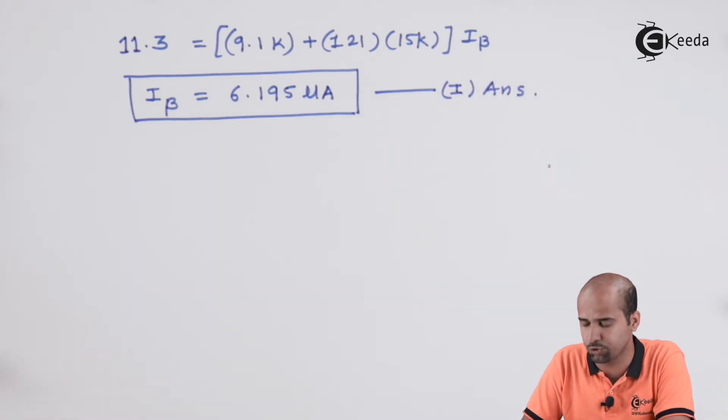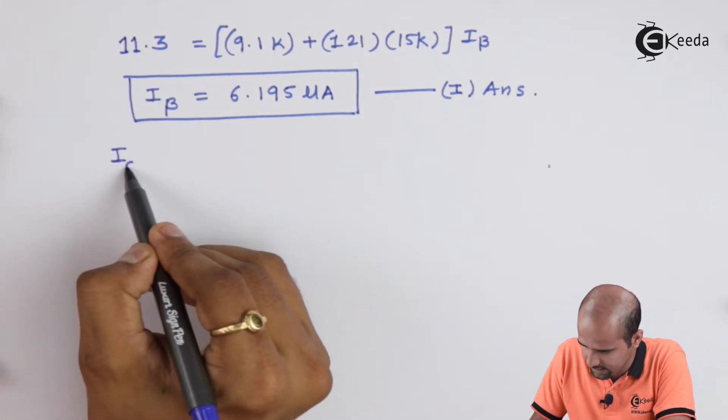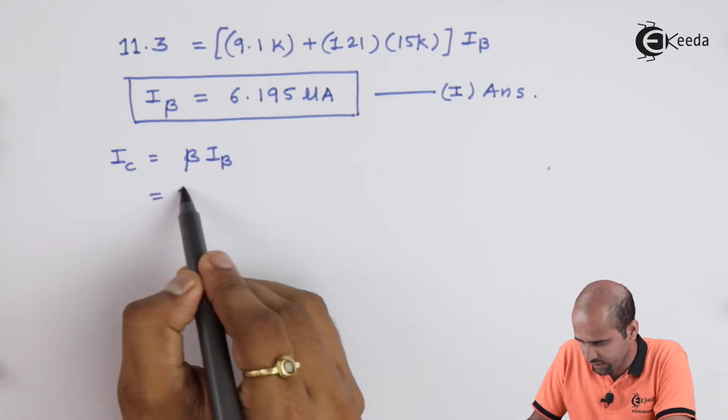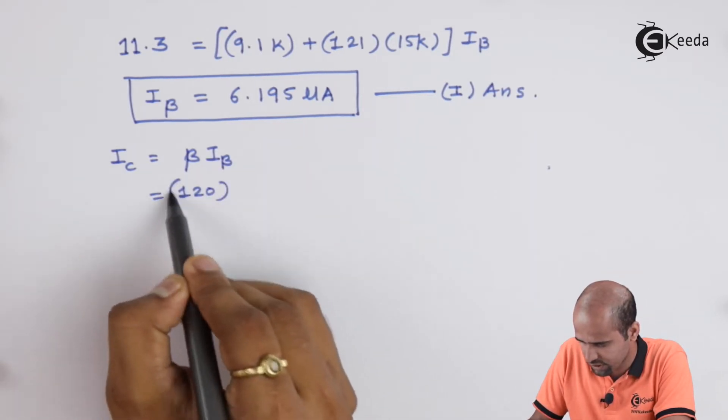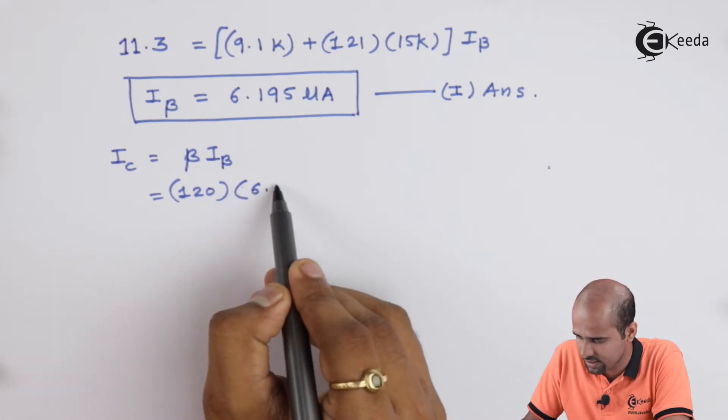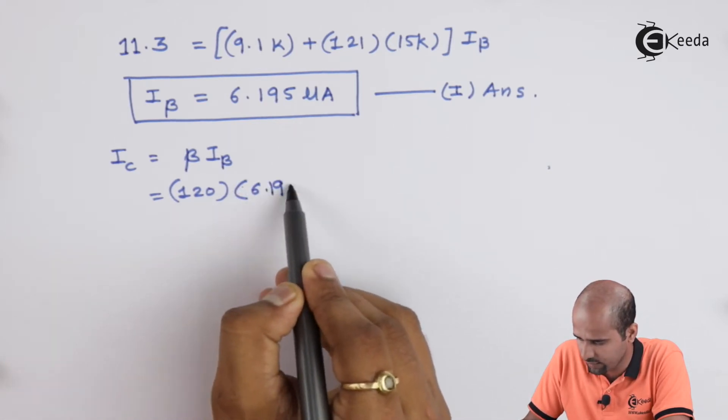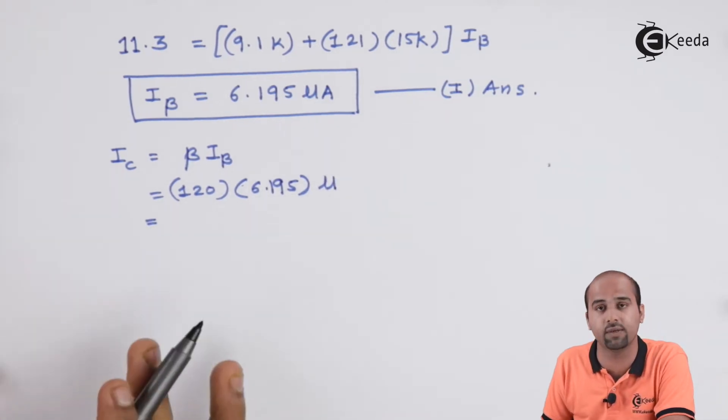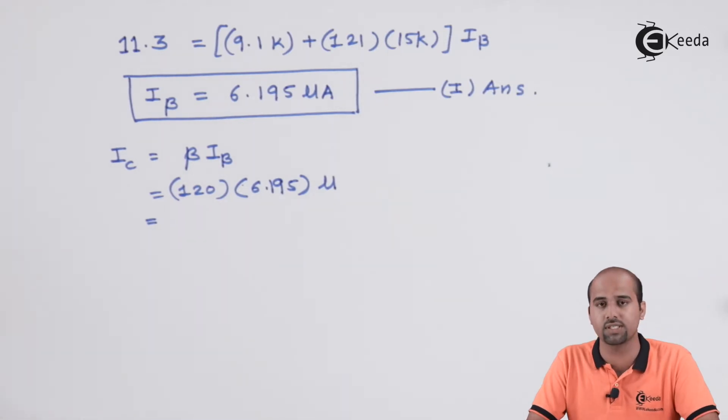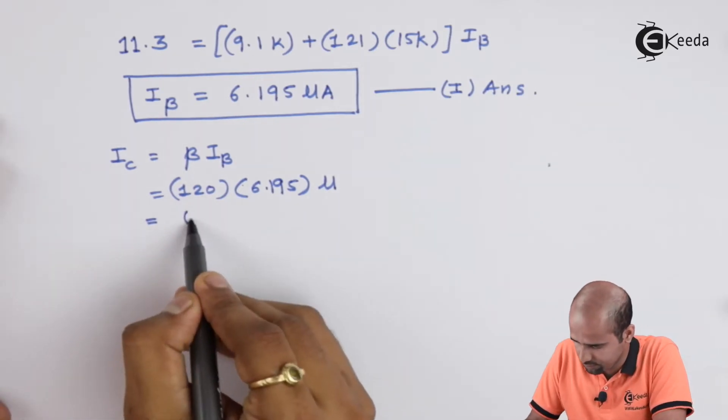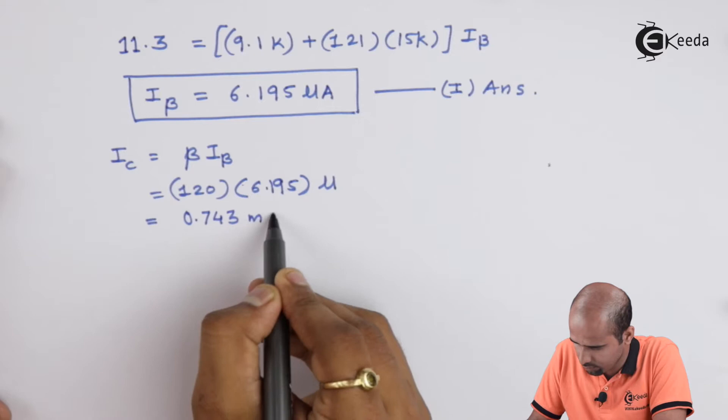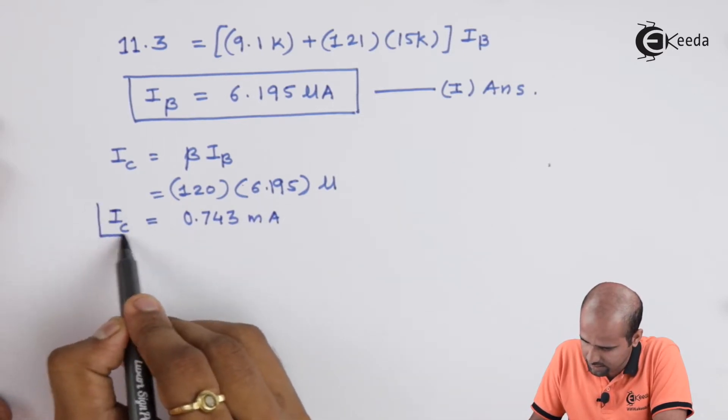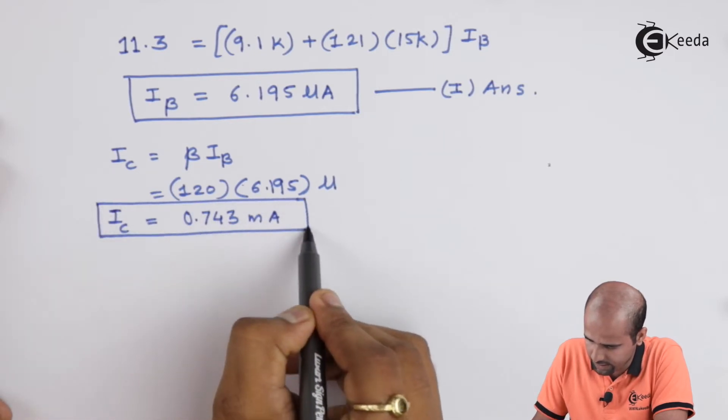Now, we will proceed further to find out next. IC is equal to beta times IB. Beta is 120. So, we will just put the value 120 multiplied by 6.195. This is in terms of micro. So, IC will be getting in terms of milli. 0.743 milliampere that is the value of IC. This is our second finding that we are expecting.